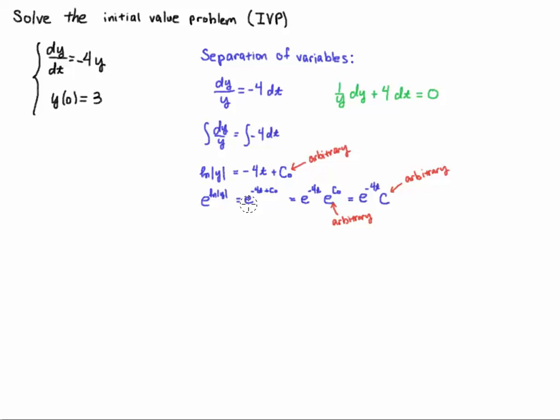Also keep in mind that the properties of the laws of exponent means that if I'm adding the exponents that means I had a product of powers with the same base so e to the minus 4t times e to the c naught is the same as e to the minus 4t plus c naught. Now since c naught is arbitrary then certainly e to the c naught is arbitrary so I'm just going to call that c. You can always play that game with arbitrary constants.